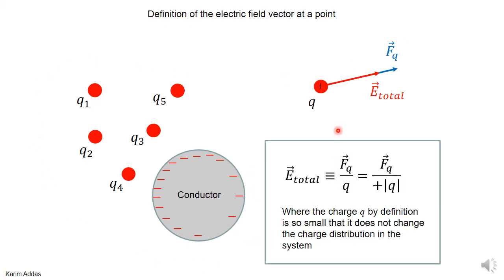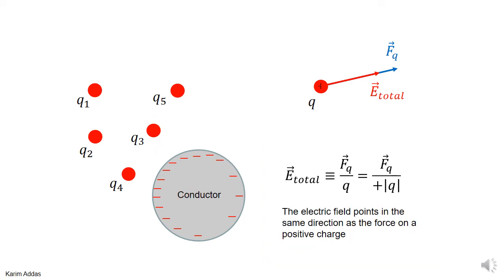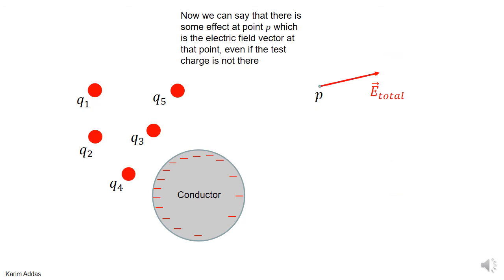By definition, the electric field at point P is the force you measure divided by the charge you bring. Since the charge is a positive test charge, we write it as the magnitude of Q. An essential comment: Q must be so small that it doesn't change the original charge distribution, so that the field you measure is due solely to the charges in the original problem. Since E = F/Q and Q is positive, the direction of the electric field vector is the same as the force vector — differing only in magnitude.